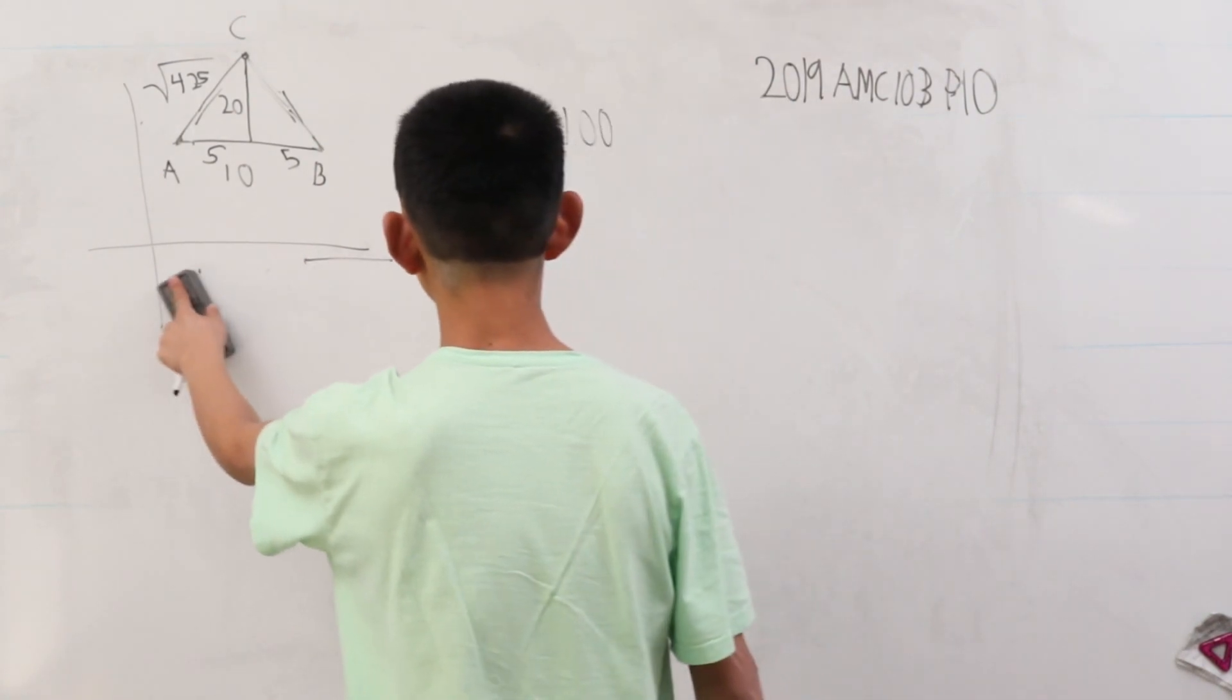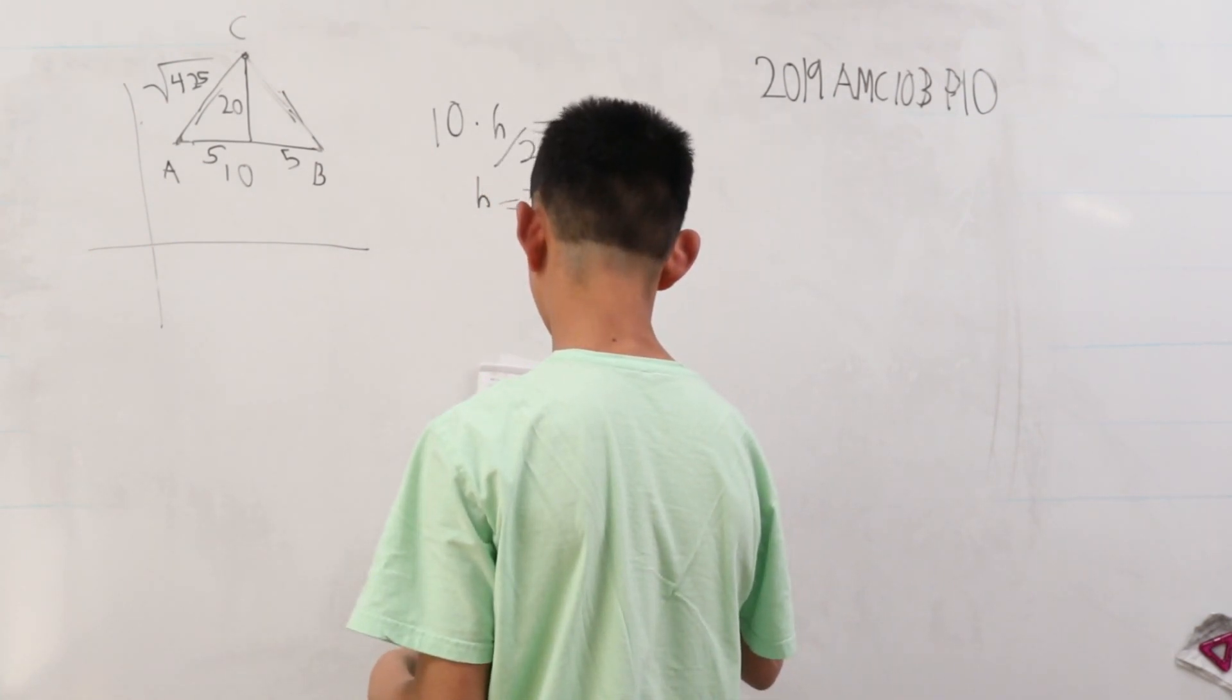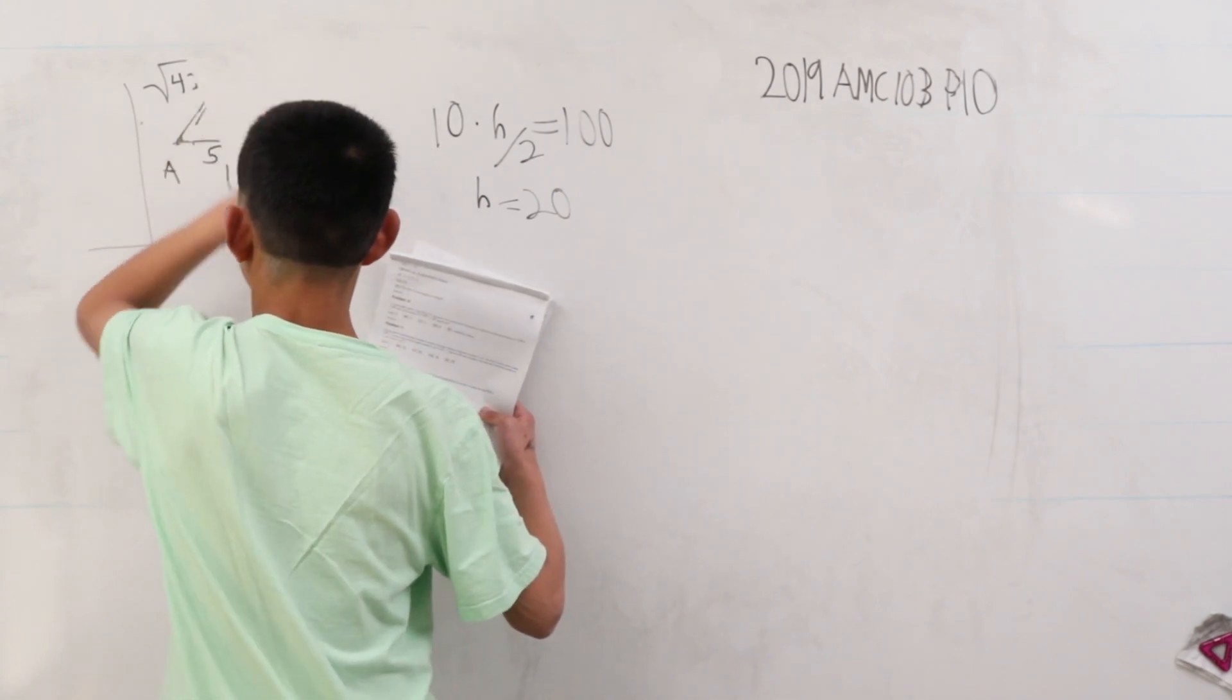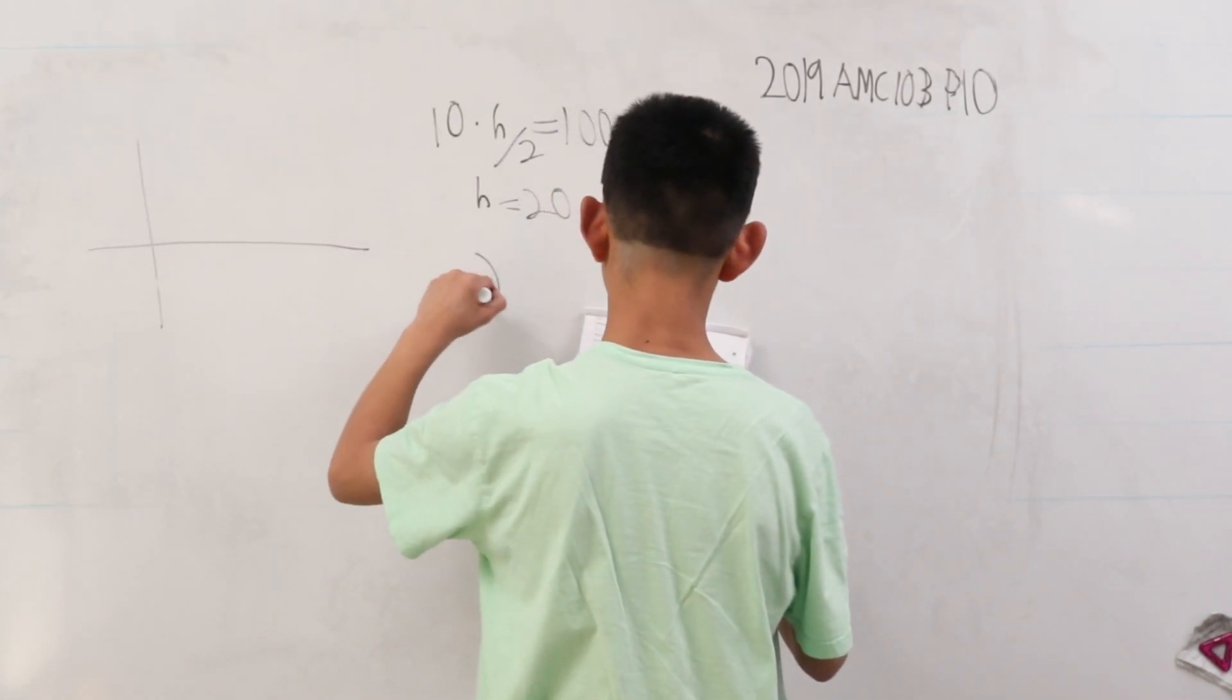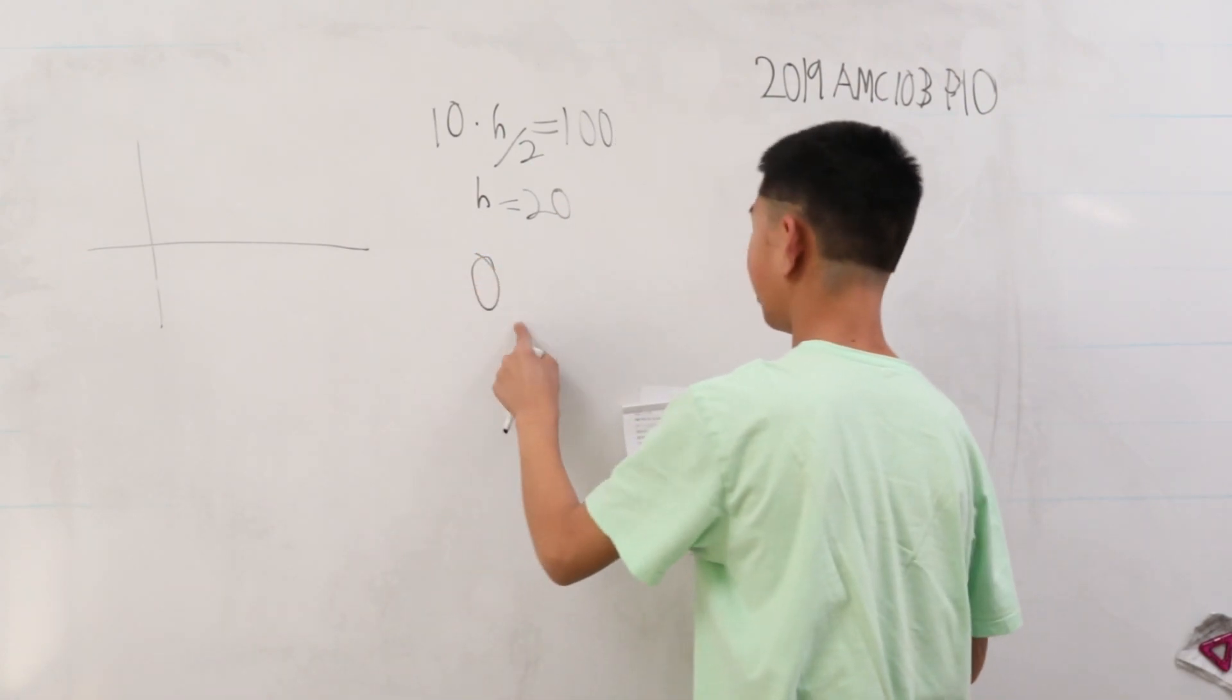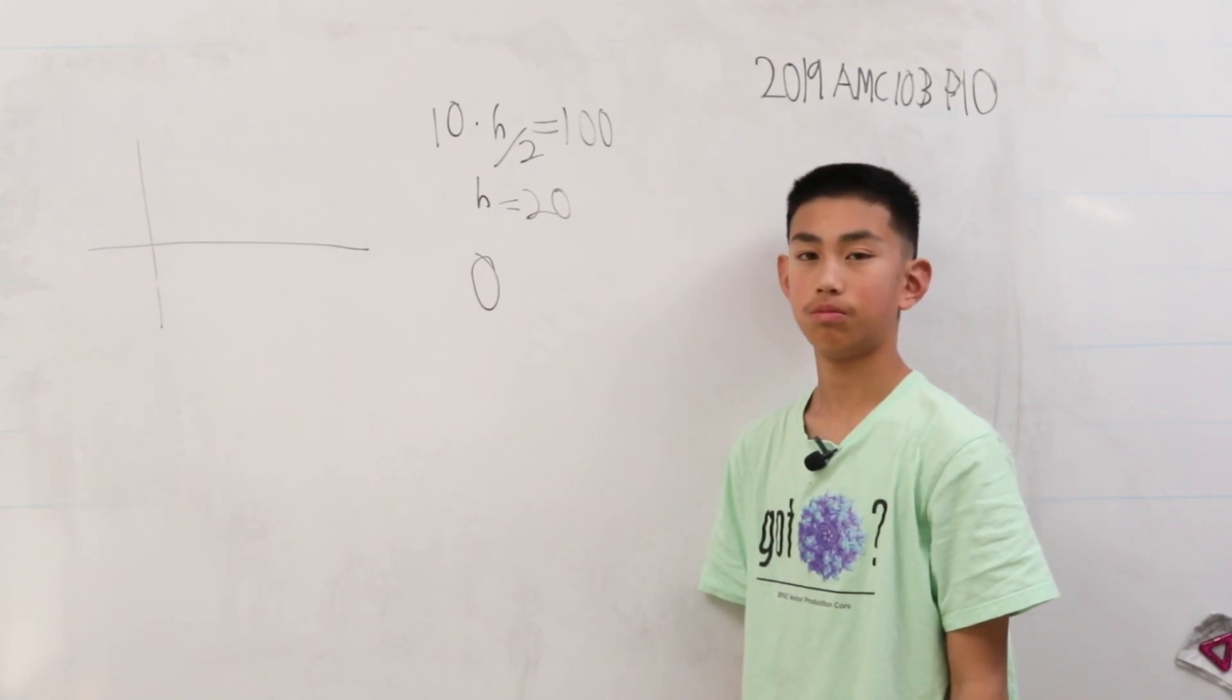So now we're kind of left with a dilemma. But then again, we can look at the answer choices and see that one of the answer choices is 0. So there are actually 0 points of C in the plane. That's our answer.